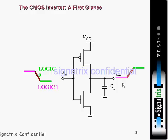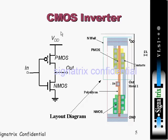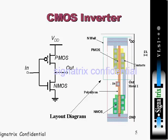So that is the property of the inverter — when you apply 0 you get 1, and when you apply 1 you get 0. Now looking at the layout diagram: this is PMOS, this is metal running to make a contact. This is VDD, and these are the active layers.